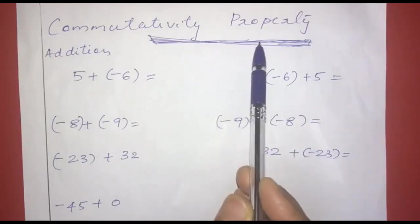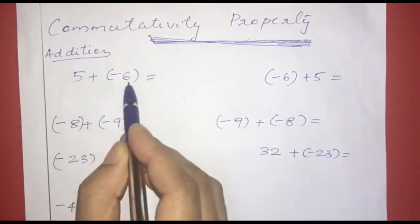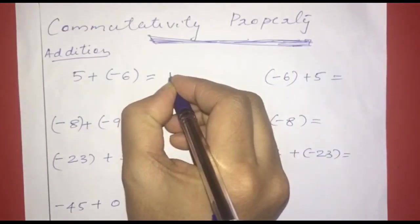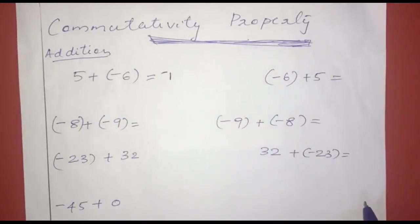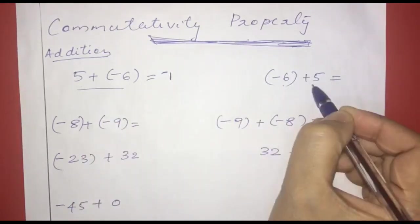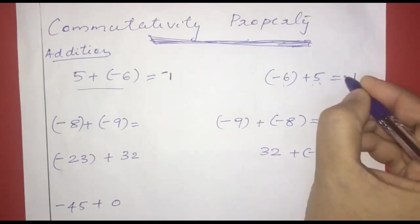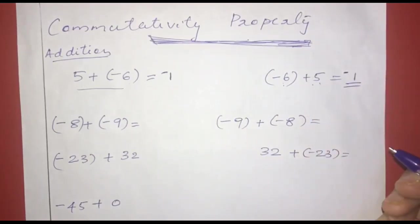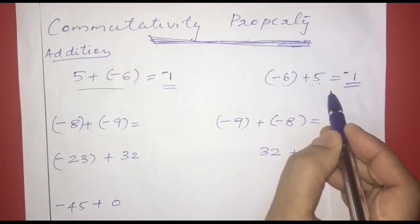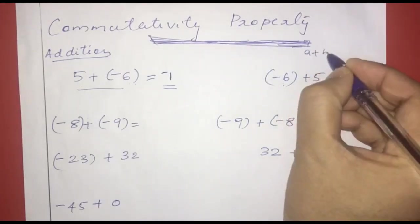The next property is the commutativity property. For addition, we can add integers in any order. Here: 5 plus negative 6. The same magnitude gives 1, and the sign is negative, so negative 1. If we reverse the order: negative 6 plus 5 is also negative 1. That is the commutative property: a plus b equals b plus a.